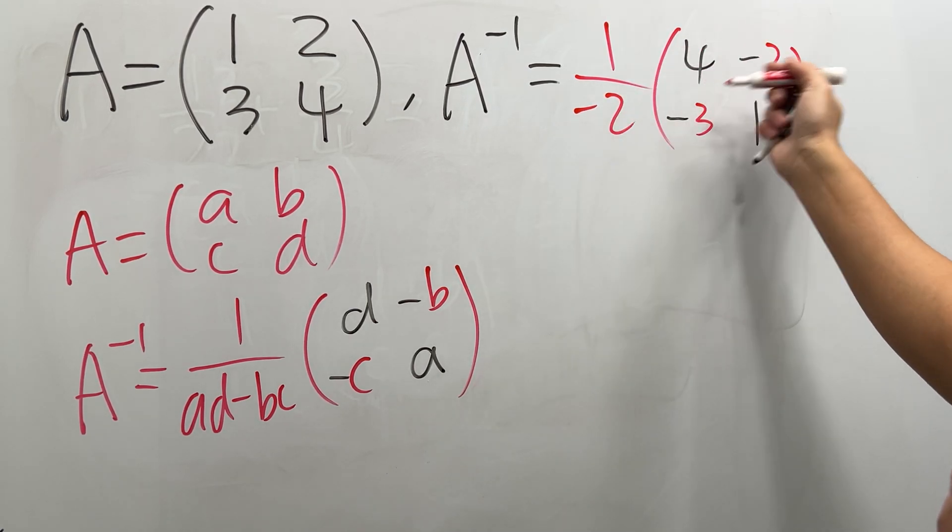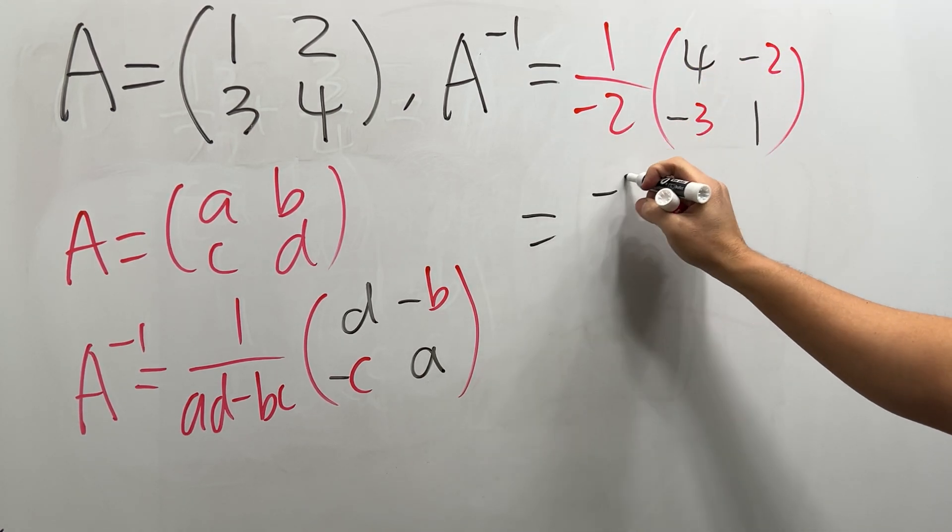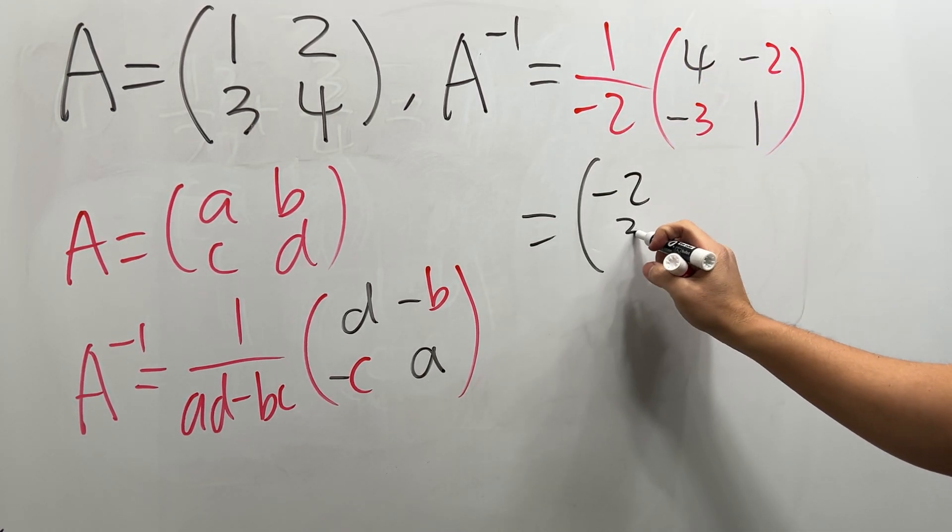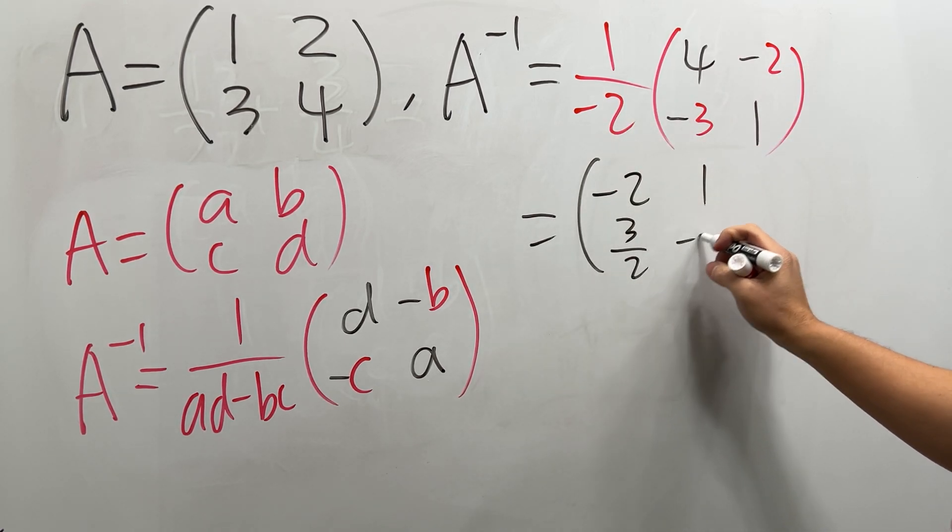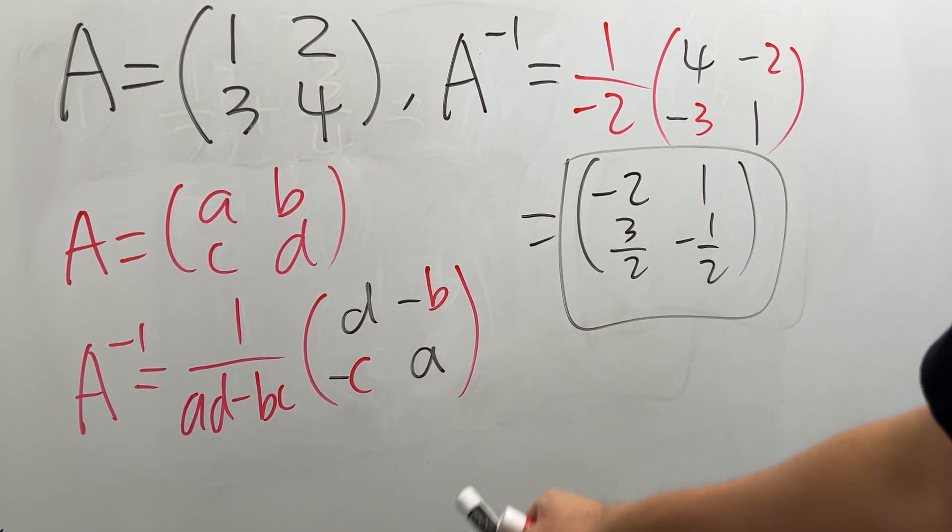And now let's just multiply the negative 1 half inside. So we are going to get this times that, which is negative 2, and then this times that is going to be positive 3 over 2. This times this is positive 1. And this times this is negative 1 half. And there you have it. This is the inverse for the matrix. Done.